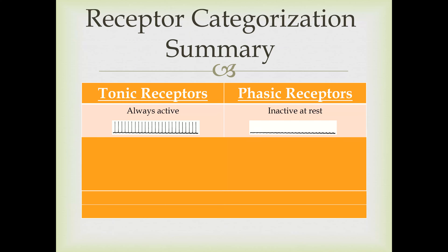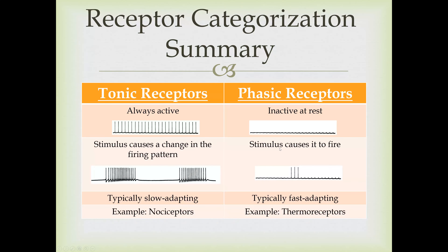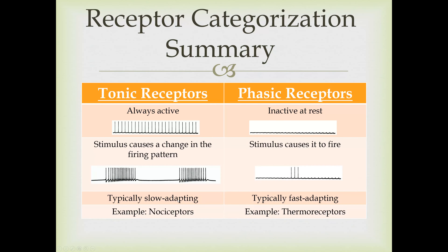As a quick summary of receptor categorization: tonic receptors are always active—always firing action potentials. Phasic receptors at rest are inactive—no action potentials. With tonic receptors, a stimulus causes a change in firing pattern, typically a change in the frequency of action potentials. With phasic receptors, you get action potentials when you have a stimulus—when the stimulus starts and when it ends—but not otherwise. Tonic receptors are typically slow-adapting receptors, and phasic receptors are typically fast-adapting receptors.